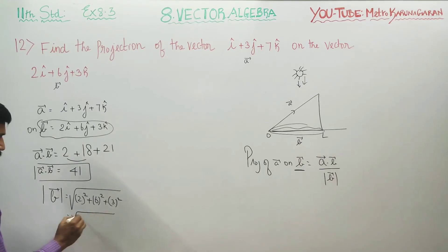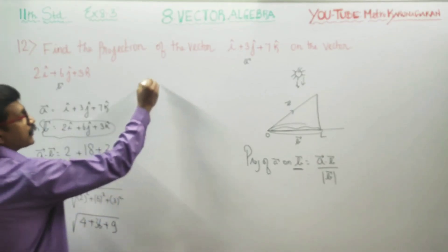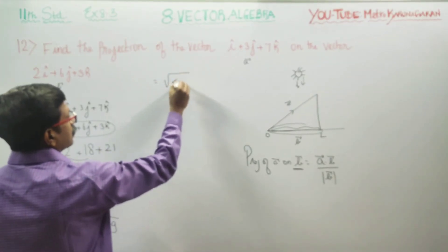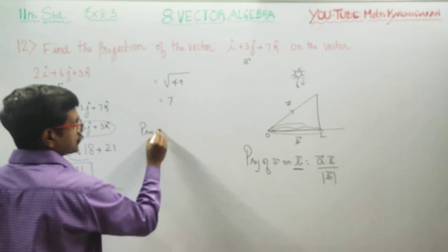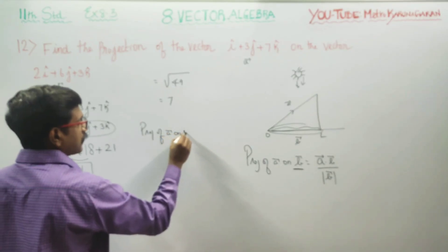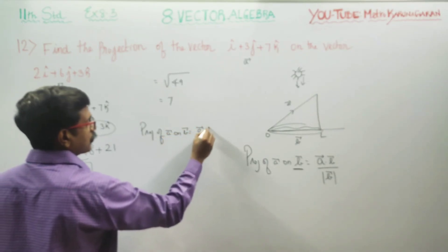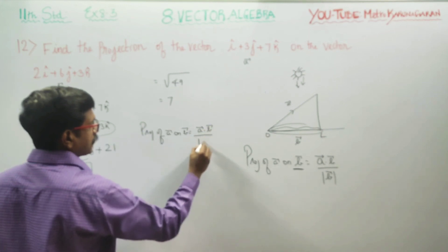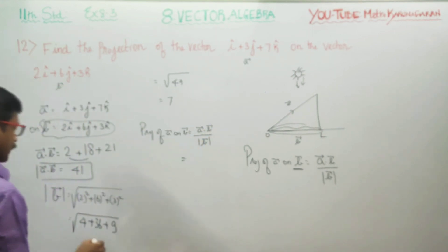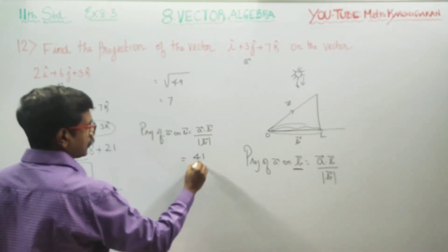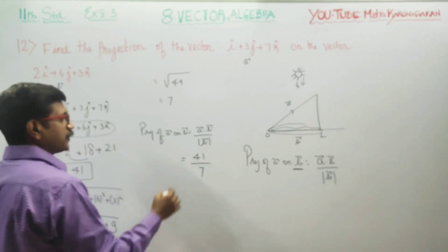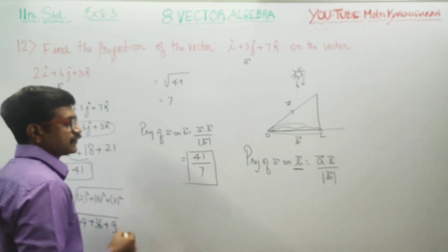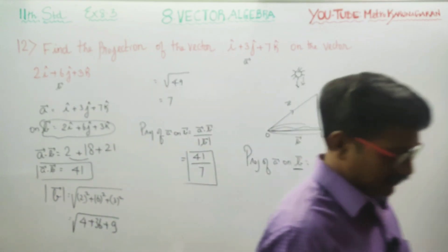Magnitude of B: 2 squared plus 6 squared plus 3 squared equals 4 plus 36 plus 9, which gives root 49, and root 49 is 7. So |B| = 7. Therefore, projection of A vector on B vector equals A·B divided by |B|, which is 41 divided by 7. Thank you.